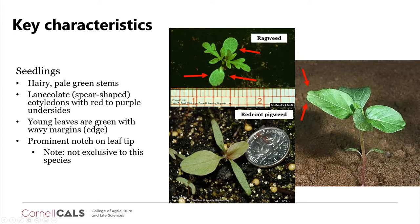There are about seven or more pigweed species in New York, and they look very similar to each other as seedlings but become more distinct as they mature.